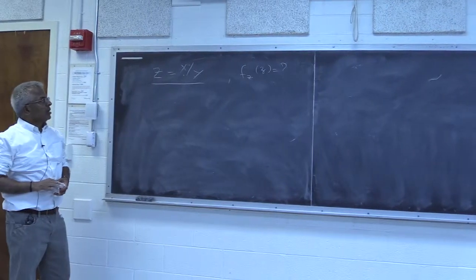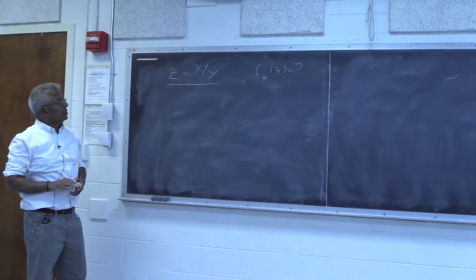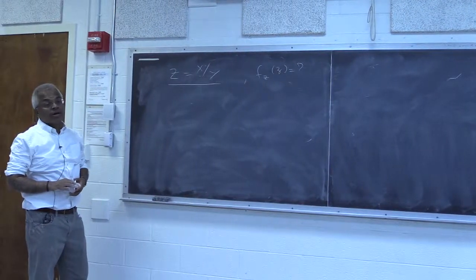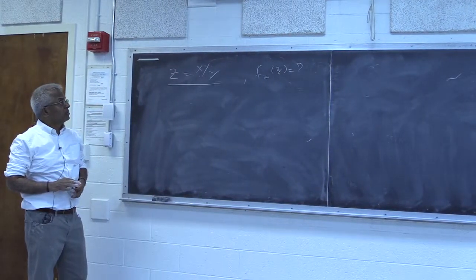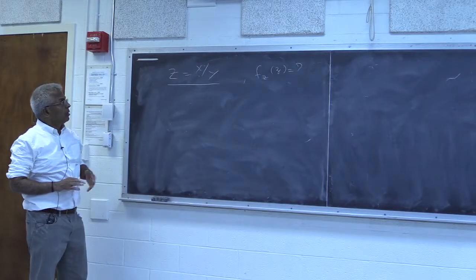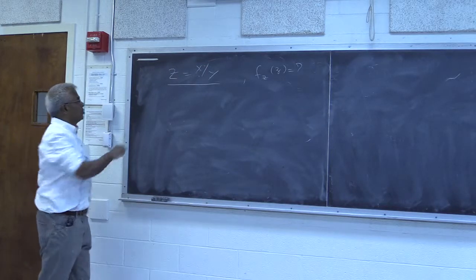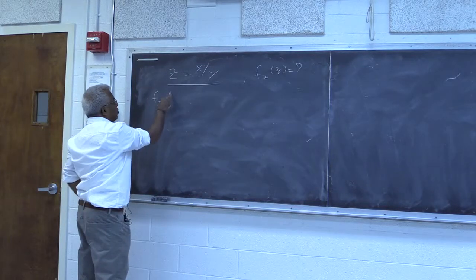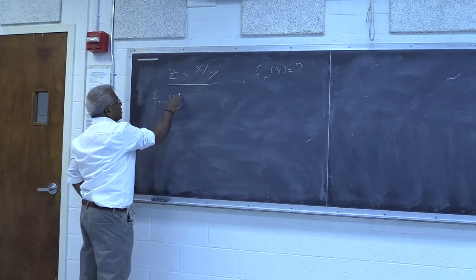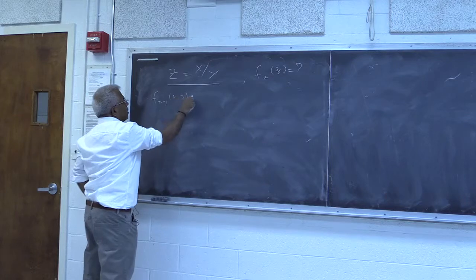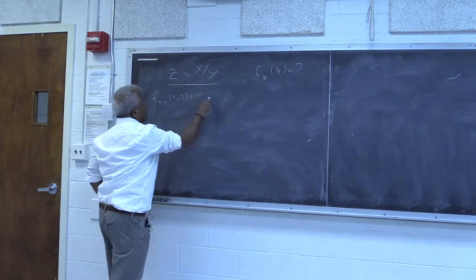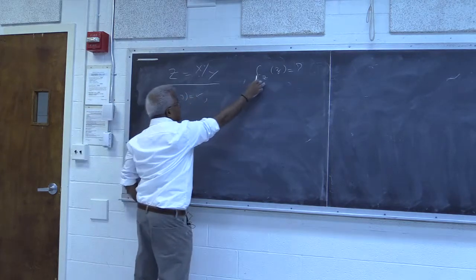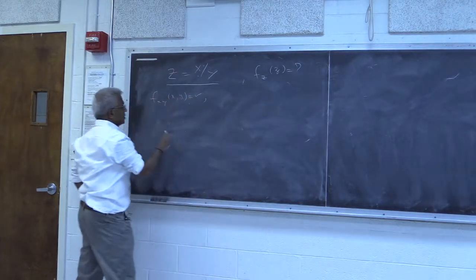This is another classic problem: the ratio of two random variables. The problem is, given the joint density function of x and y, find the density function of z.